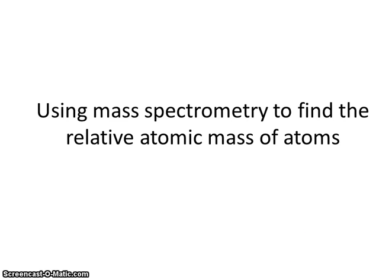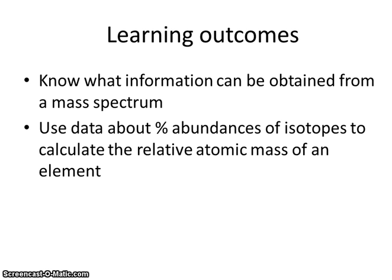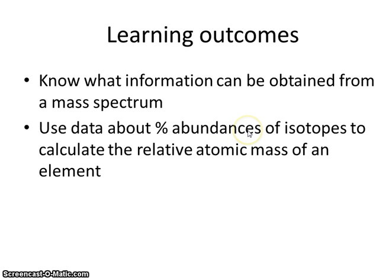This is a video from the Queen Mary's College Chemistry Department introducing you to a new idea: how data from a technique called mass spectrometry is used to find the relative atomic mass of particular elements. These are the particular outcomes that will come out of this video. You need to be aware of what a mass spectrum looks like, the information we can obtain from it, including the percentage abundance of different isotopes, and how to use that to work out the relative atomic mass of an element.